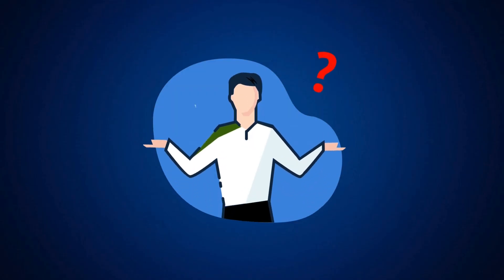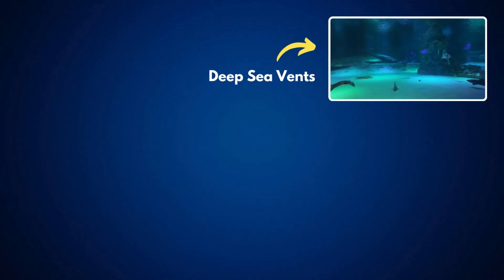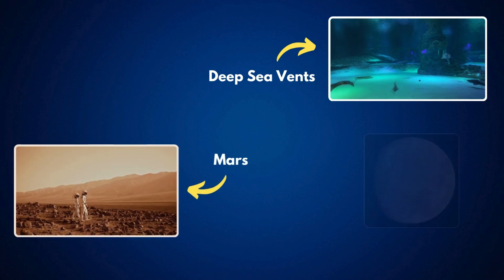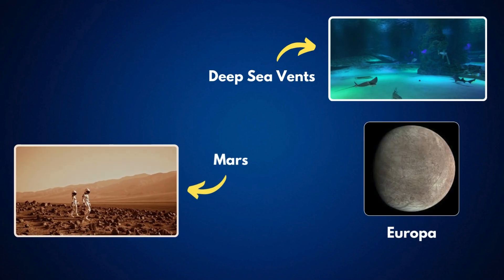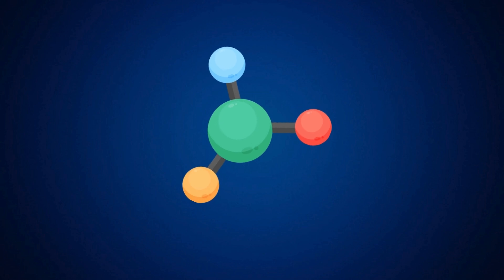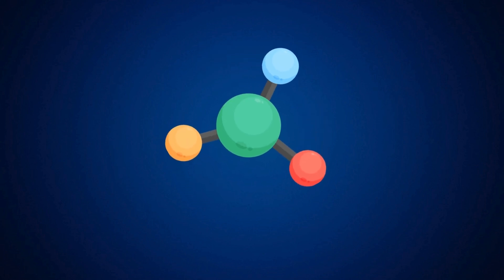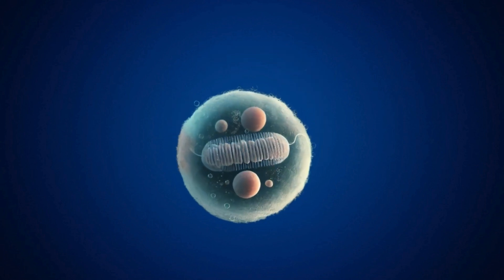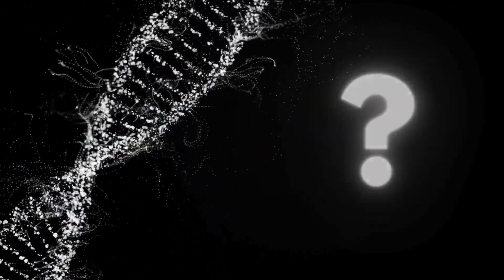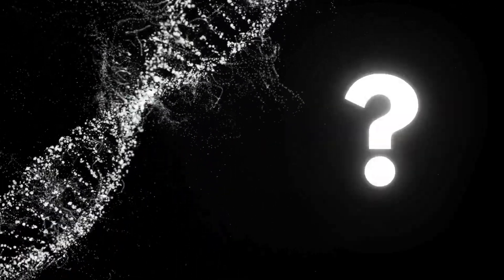Despite all we've discovered, the mystery of life's origin isn't fully solved. Scientists are still searching for answers, exploring deep-sea vents, looking for life on Mars and Europa, and even attempting to create artificial life in the lab. Perhaps one day, we'll finally uncover the full story of how lifeless chemicals turned into living cells. But for now, the question remains one of the greatest scientific puzzles of all time.